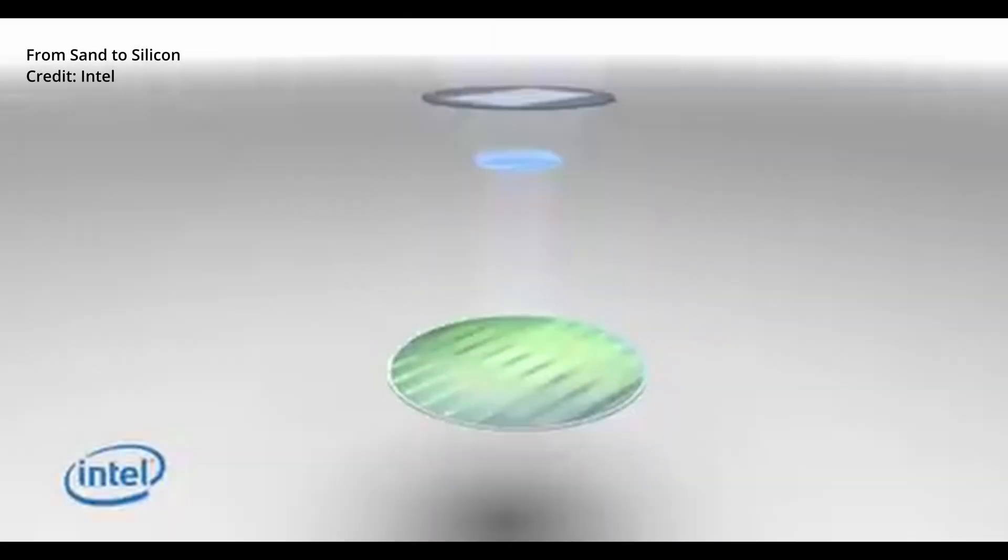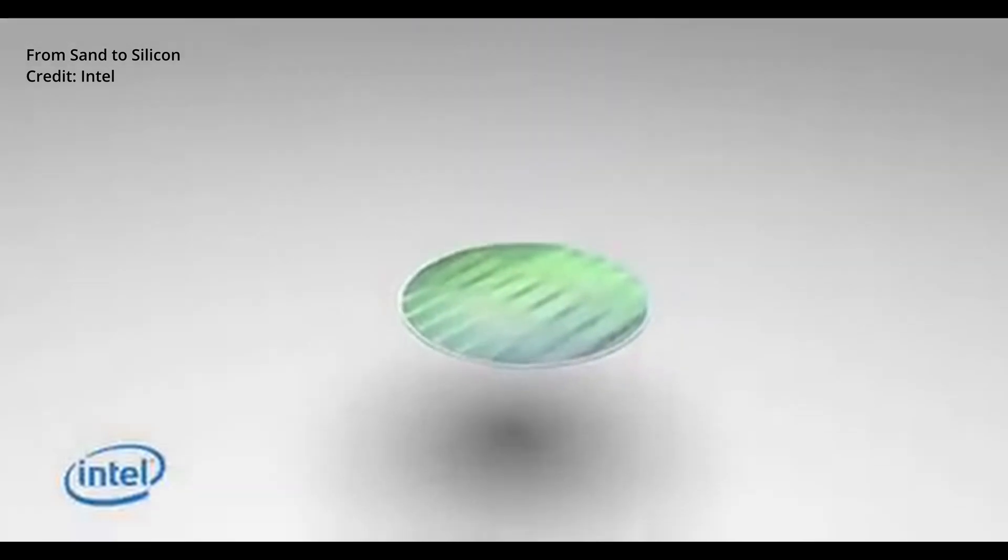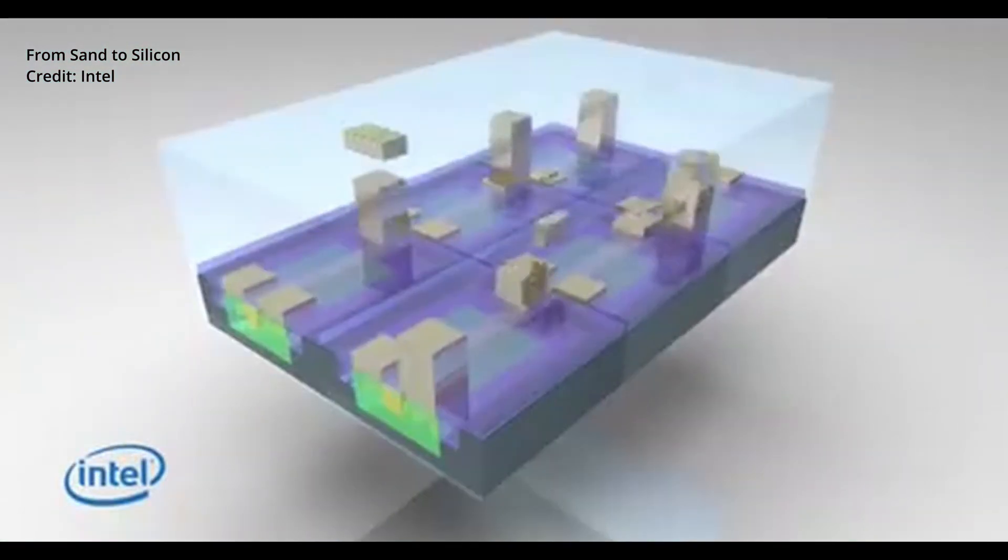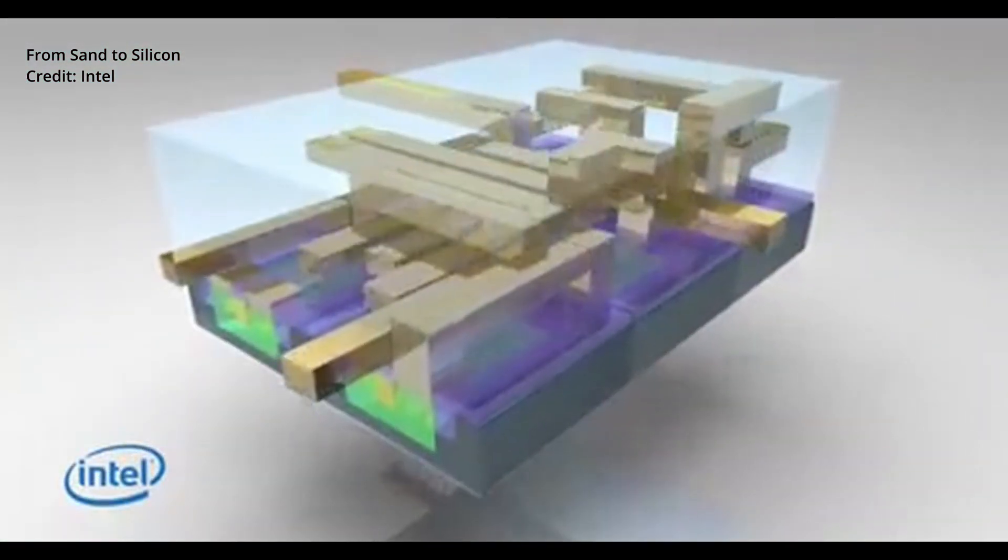Ion implantation is a process that is used to change the material properties of the silicon in select areas. Material deposition is used to lay down materials like dielectrics and metals where you need them. And material removal is used to remove them where they're unwanted.